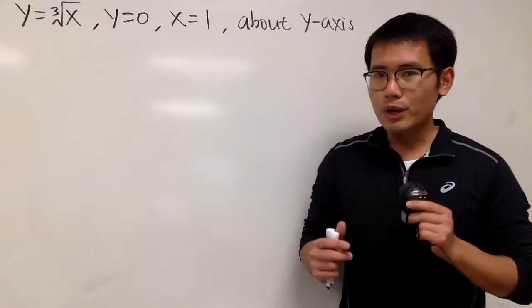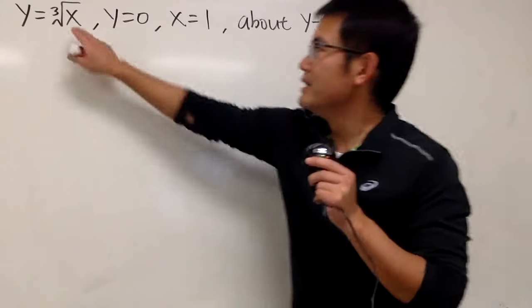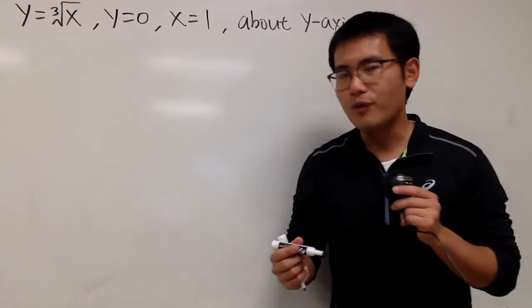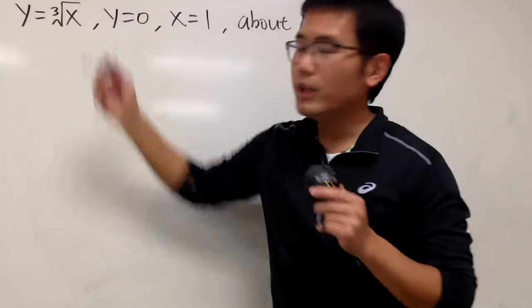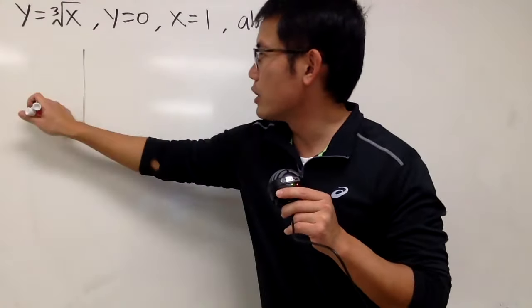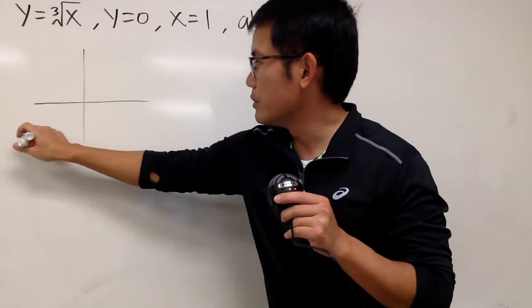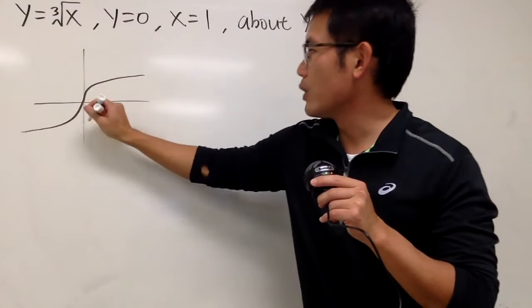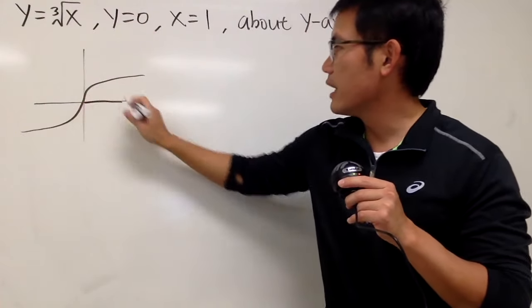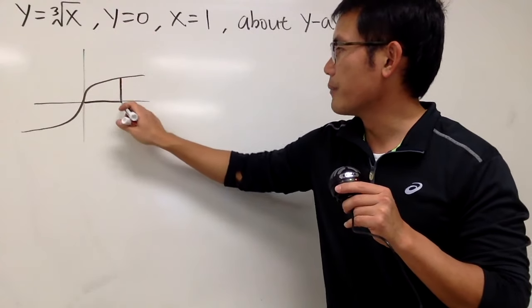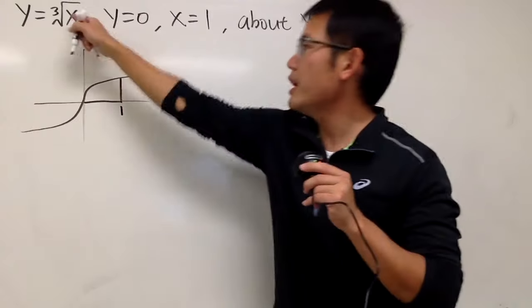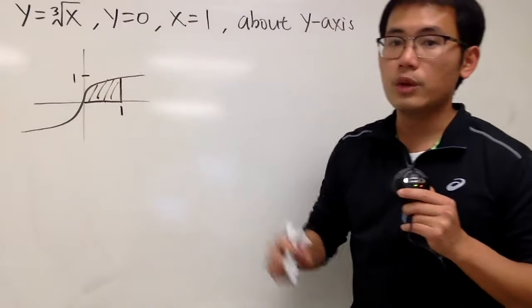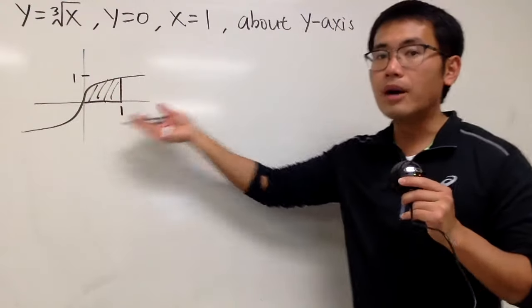We are going to find the volume generated by rotating the region bounded by these equations about the y-axis. First let's graph the region. We have the cube root of x. When x equals 1, cube root of 1 is also 1. We want y = 0, which is the x-axis, and x = 1. So this is the region we want, and we are going to rotate it about the y-axis.